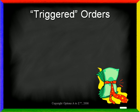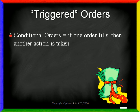Before I go through the actual demonstration, it will help to clarify some of the specialized orders I'll be talking about. Thinkorswim offers a number of what are called triggered orders, which are simply conditional orders. This just means that if one order fills, then another action of some kind is taken. The orders are all tied together in some way. While Thinkorswim offers many variations, they are all created by using two main types of advanced orders.